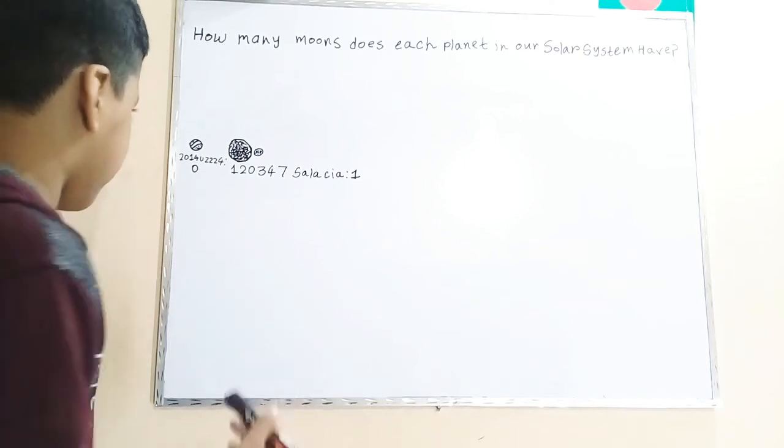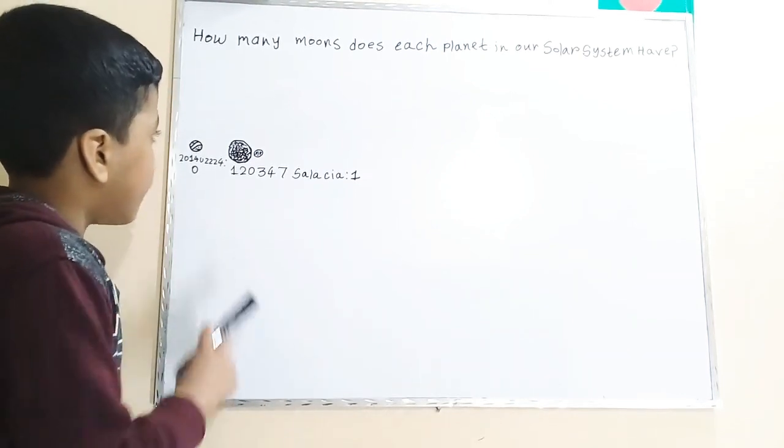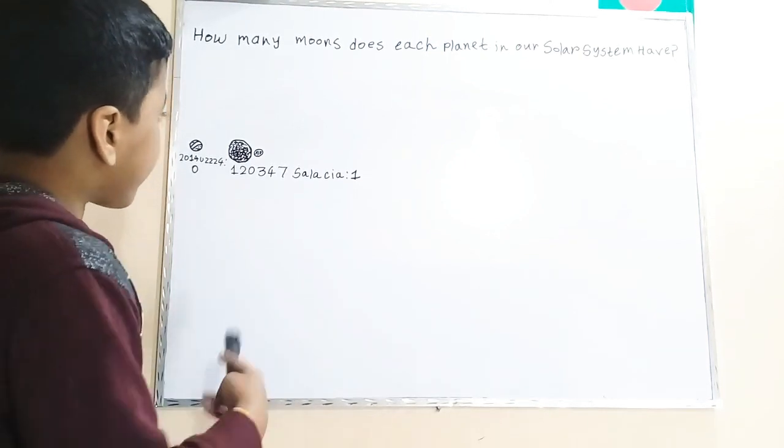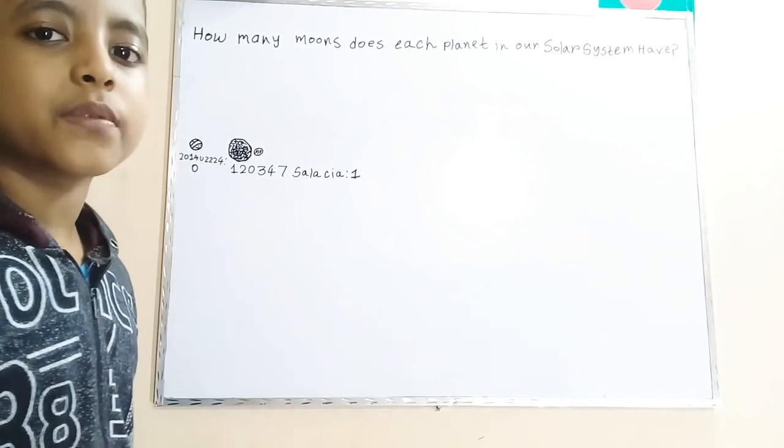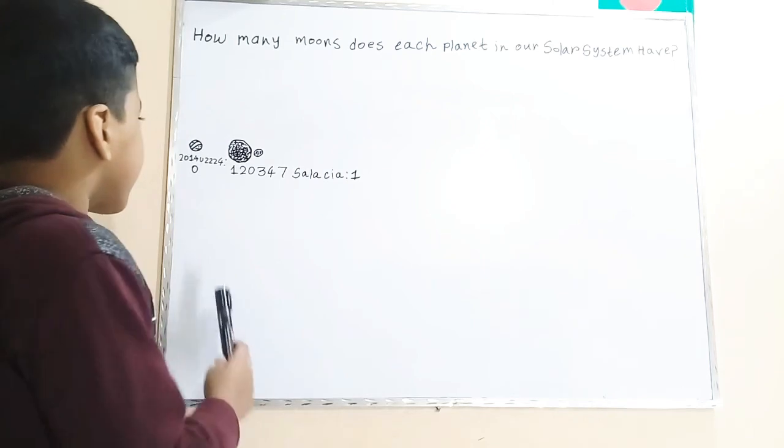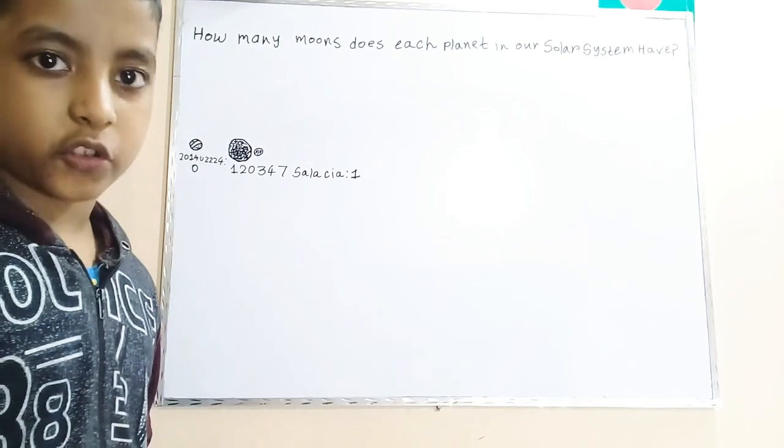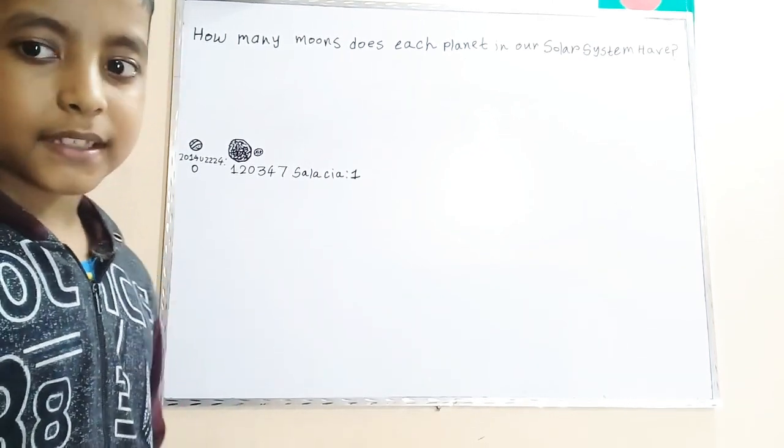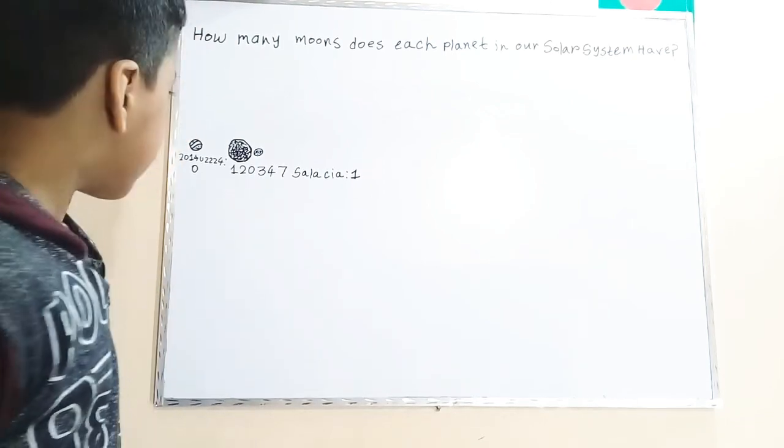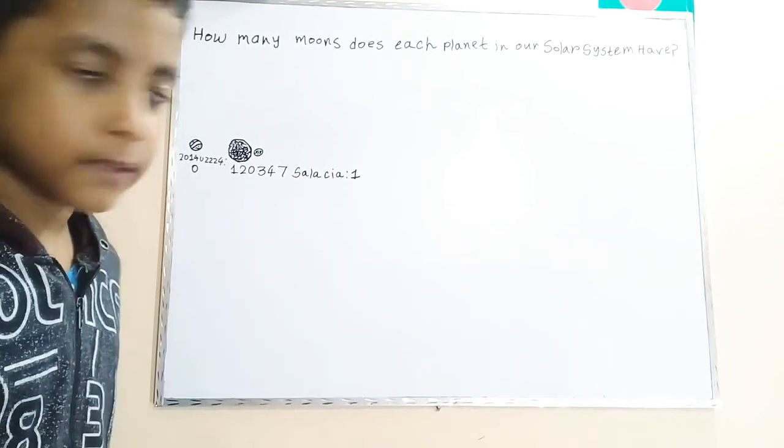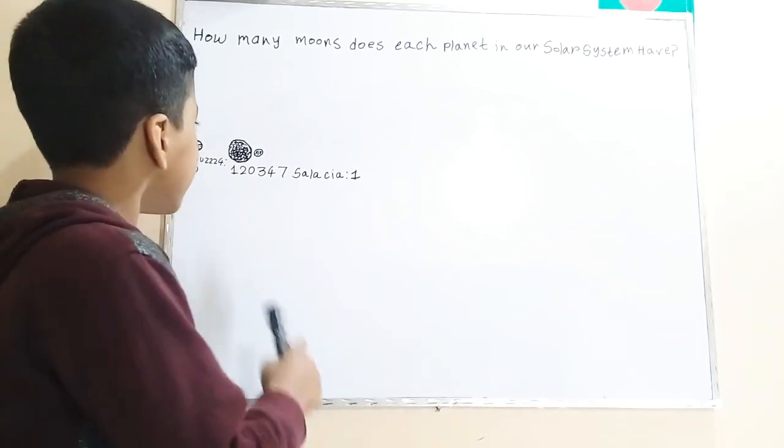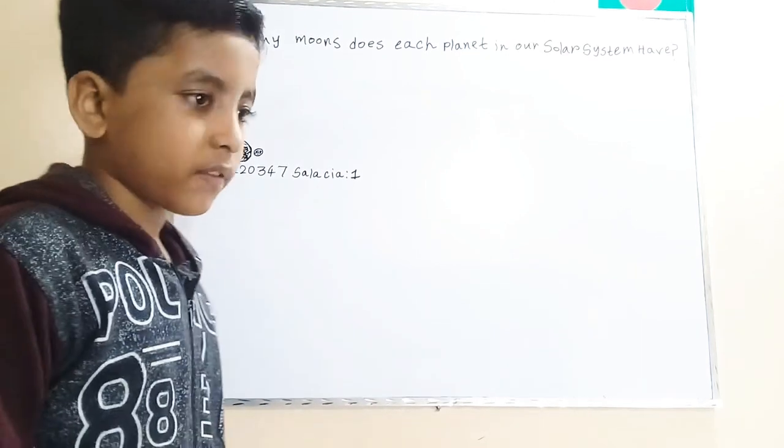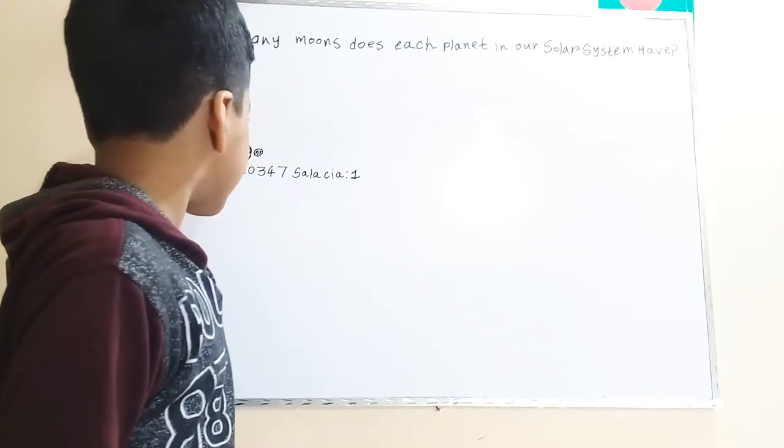And Salacia is also smaller than Ceres. 120347 Salacia is also smaller than Ceres. And I have a fact about 2014 UZ224, that is the second farthest planet. It's a dwarf planet candidate.